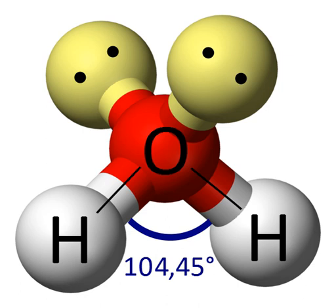For example, when there are two electron pairs surrounding the central atom, their mutual repulsion is minimal when they lie at opposite poles of the sphere; therefore, the central atom is predicted to adopt a linear geometry. If there are three electron pairs surrounding the central atom, their repulsion is minimized by placing them at the vertices of an equilateral triangle centered on the atom; therefore, the predicted geometry is trigonal. Likewise, for four electron pairs, the optimal arrangement is tetrahedral.